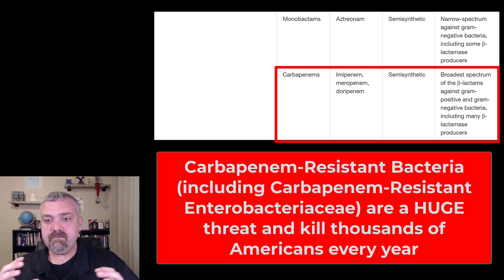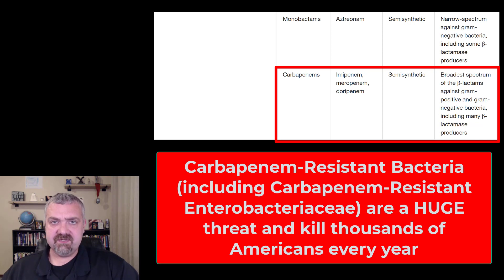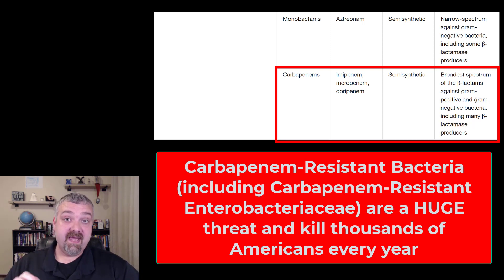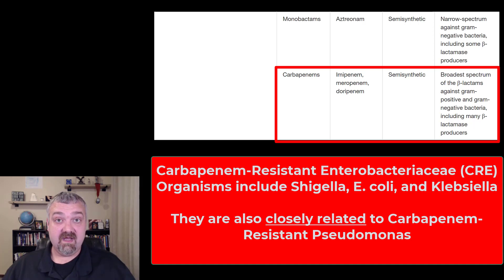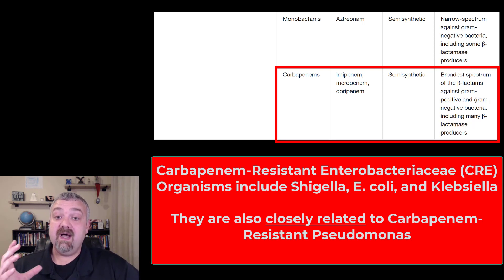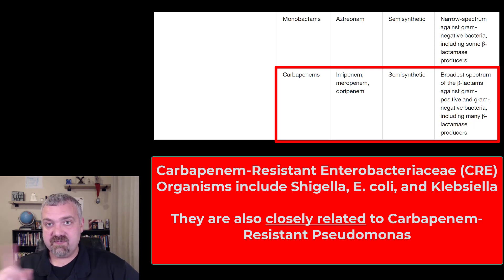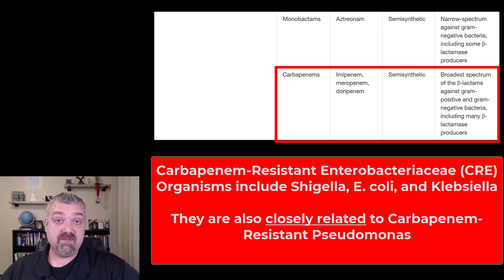So why does this matter so much? If you type in 'nightmare bacteria' or look at the biggest concerns the CDC has regarding antibiotic resistance, they are going to be the CRE organisms — carbapenem-resistant Enterobacteriaceae. This is a large family of organisms: Shigella, Klebsiella, E. coli, Pseudomonas — these kinds of organisms. When they become resistant to carbapenems, we're basically out of antibiotic options, or almost out of them. Because if you're carbapenem resistant, you're also resistant to the other beta-lactam antibiotics. These are all superbugs, meaning they're resistant to more than one type of drug.